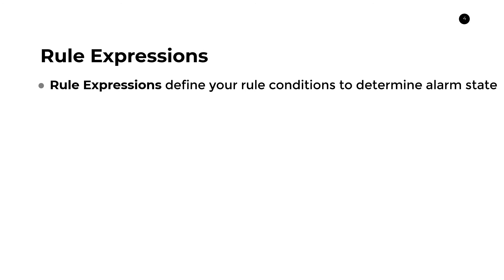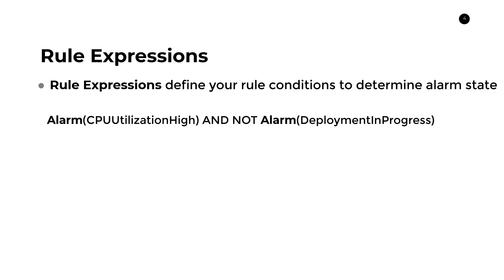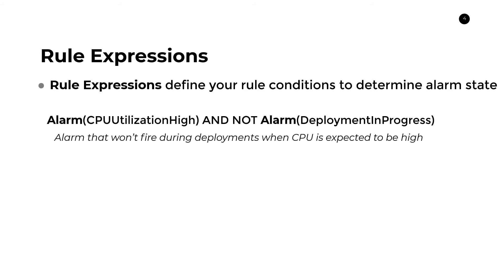Now let's talk about the details you need to know when creating composite alarms. The main concept is rule expressions, which define the conditions to determine your alarm state. Here's an example: we want to alarm when CPU utilization is high AND NOT when we have a deployment in progress. During deployments it's expected for CPU utilization to spike — you're parsing dependencies, launching the server, getting everything running. So we don't want to trigger the CPU alarm during a deployment, as that spike is completely expected.